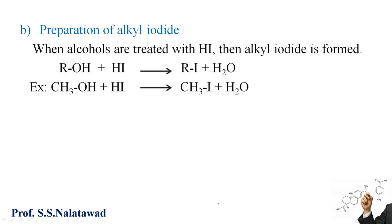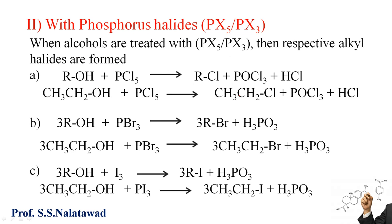Next is preparation of alkyl iodide, where hydrogen halide is HI — hydrogen iodide. When alcohols are treated with hydrogen iodide, alkyl iodide is formed. The OH group of an alcohol gets protonated, forming water, and the carbocation combines with the halogen to form alkyl iodide and water. For example, methanol reacts with hydrogen iodide to form methyl iodide and water.